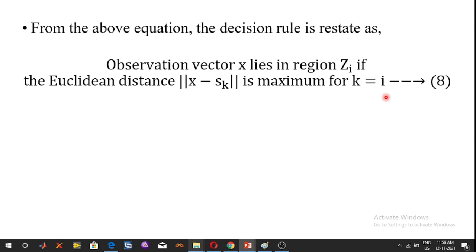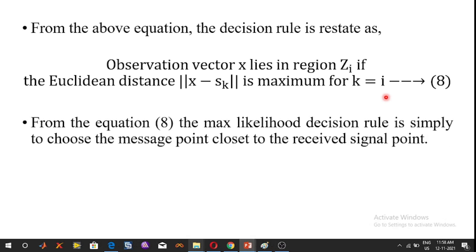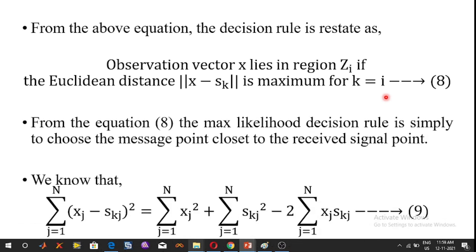Therefore, the maximum likelihood decision rule is simply to choose the message point closest to the received signal point. Expanding sigma j=1 to N of (Xj minus SKj)² using (A minus B)² = A² + B² minus 2AB, we get: sigma j=1 to N Xj² plus sigma j=1 to N SKj² minus 2 sigma j=1 to N Xj·SKj.